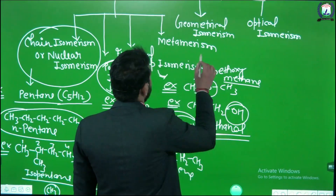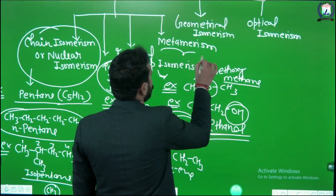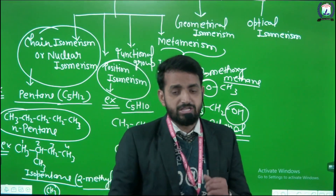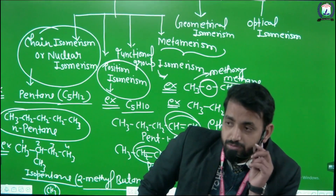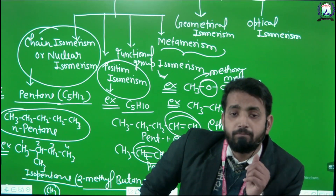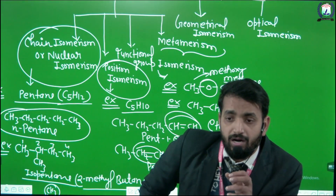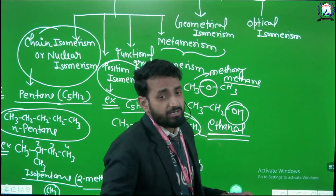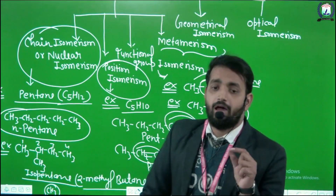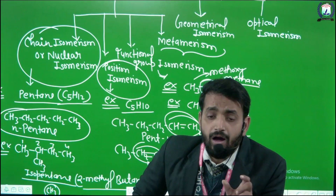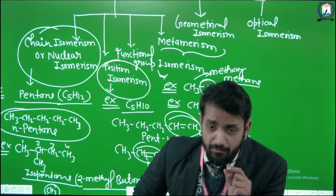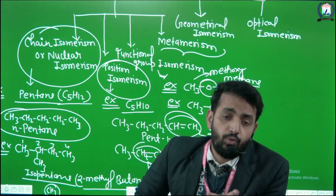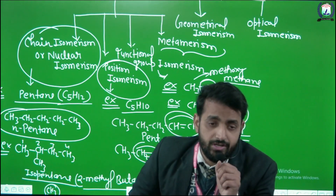The last type of structural isomerism is metamerism. In metamerism, compounds have the same molecular formula and the same functional group, but the carbon chain on either side of the functional group is different.